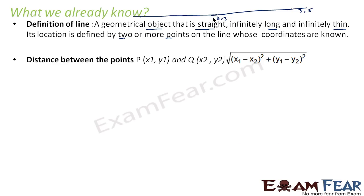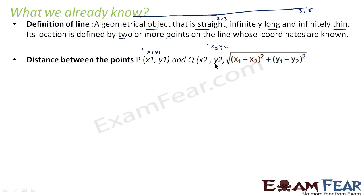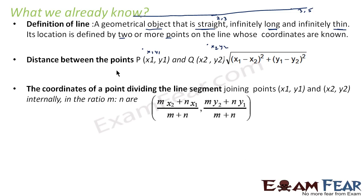The distance between two points P(x1, y1) and Q(x2, y2) is given by the formula: root of (x1 minus x2) squared plus (y1 minus y2) squared. These concepts you already learned in your early classes. If you are given two points x1, y1 and x2, y2, you can use this formula to find the distance.